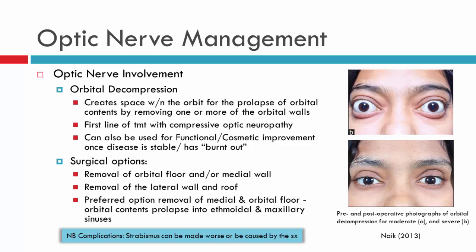For patients who have compressive optic neuropathy, one of the first-line treatments is orbital decompression. With orbital decompression, walls of the orbit are removed — one wall or more than one wall — to create extra space for the globe and the extraocular muscles, and to prevent compression of the optic nerve. In most instances, the floor and/or the medial wall are removed, but the lateral wall or roof can also be removed. The preferred option is generally the medial and orbital floor walls, as the ethmoidal and maxillary sinuses are there to assist with creating space.